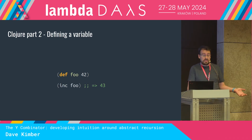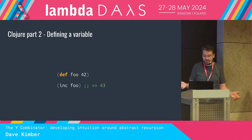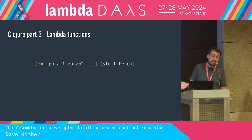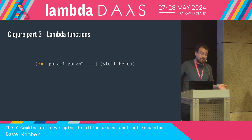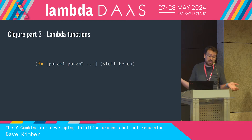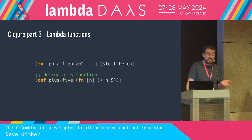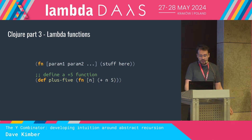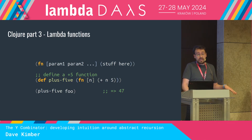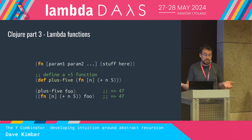We can define variables with def — here we create a variable foo with a value of 42, and use it anywhere you'd expect to use a variable. We also have anonymous functions. The syntax starts with fn, then a vector of parameters, then a body expression, and the function returns the result of evaluating that body. We can give functions a name with def, creating a plus-5 function that takes a single argument n and adds 5 to it. To call it, we wrap it in parentheses with its arguments. Alternatively, we can use lambda expressions directly.